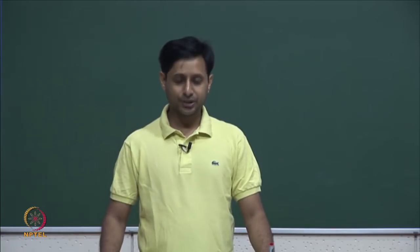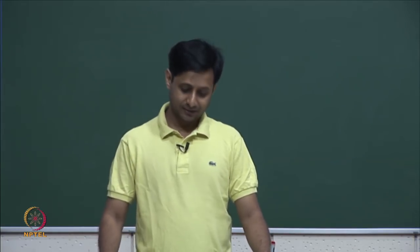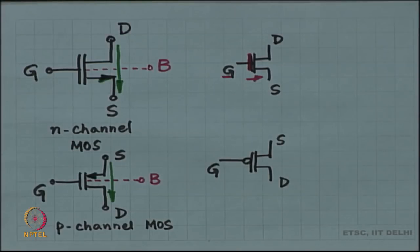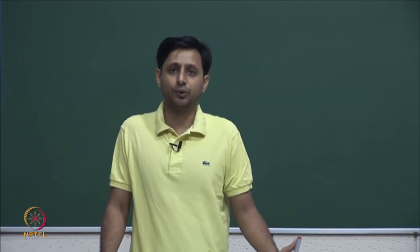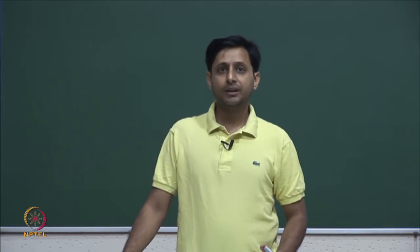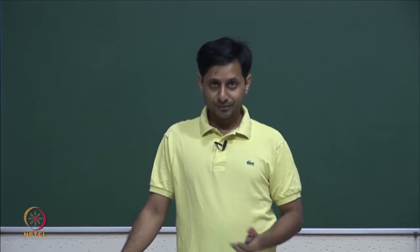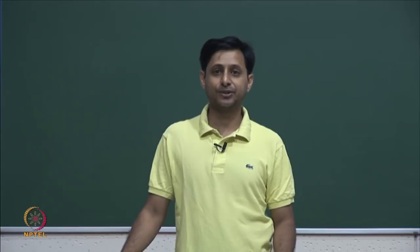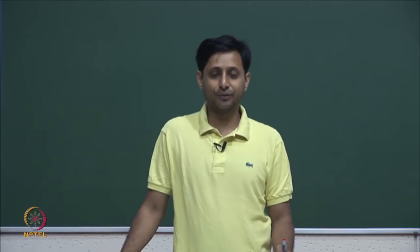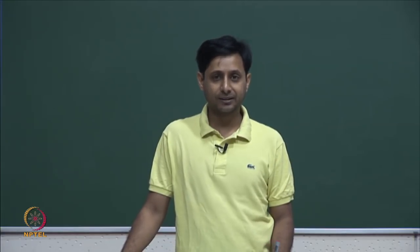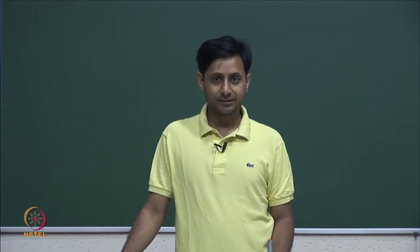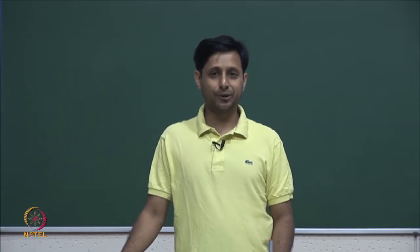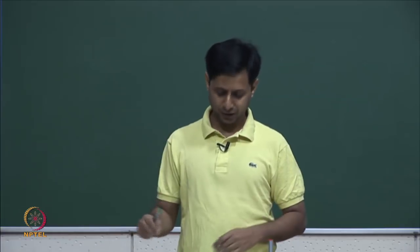In digital circuits, the symbol does not have an arrow at all because the MOSFET is a symmetrical device and it does not matter which terminal is source and which is drain. In analog circuits, does it matter which is source and which is drain? How do you figure out which is source and which is drain, especially when the MOSFET is a perfectly symmetric device?